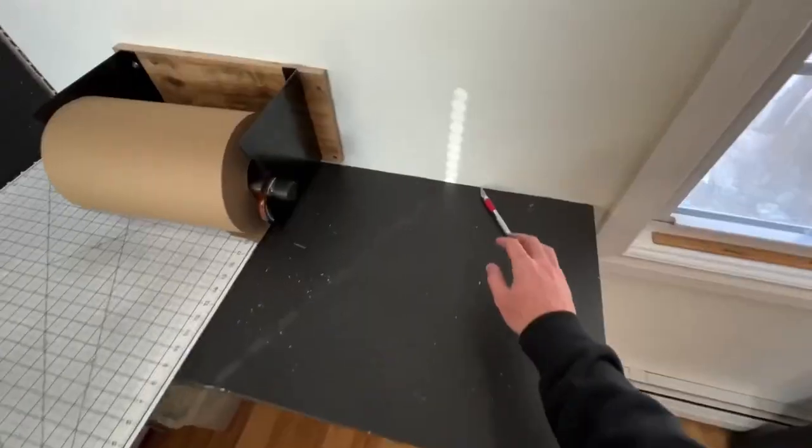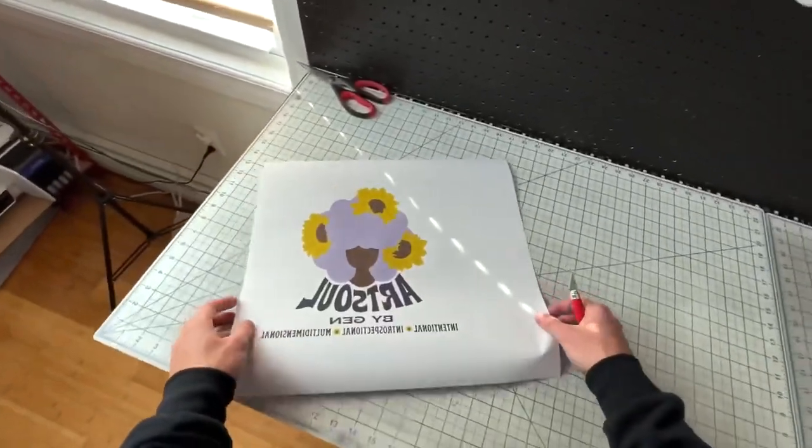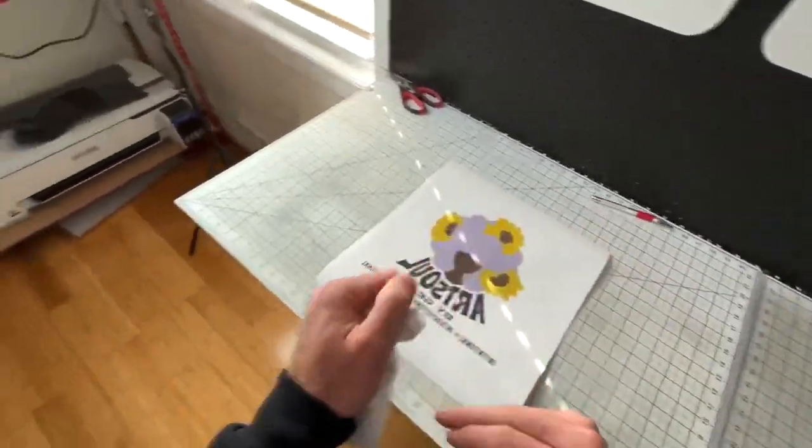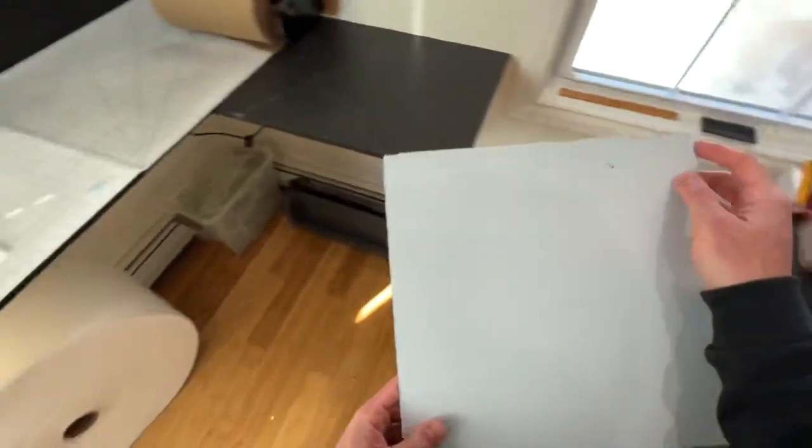Today we're going to be printing a logo onto a sheet of metal. This process is called sublimation and the first thing we do is fire up our heat press to 400 degrees, then take our design that's printed on a piece of sublimation paper.